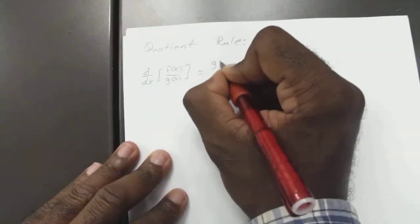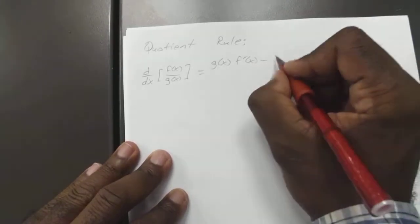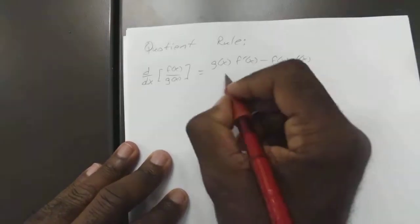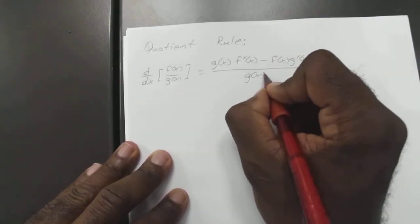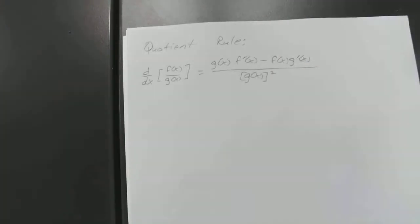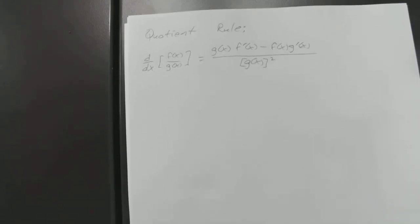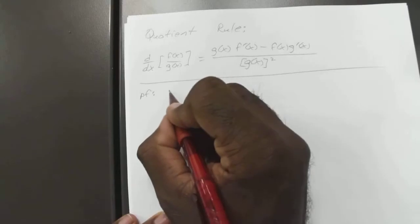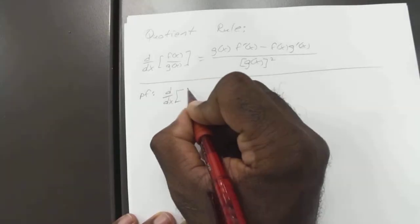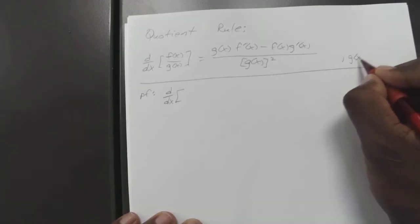So for the quotient rule: the derivative with respect to x of f of x divided by g of x equals the denominator times the derivative of the numerator, minus the numerator times the derivative of the denominator, all over the denominator squared. And of course, g of x cannot equal zero.